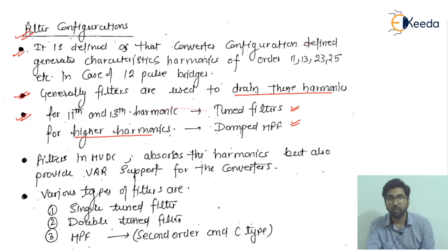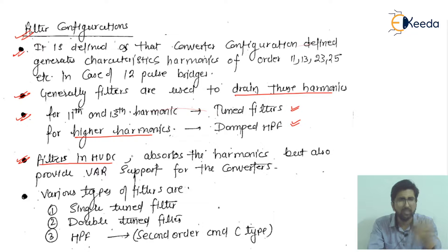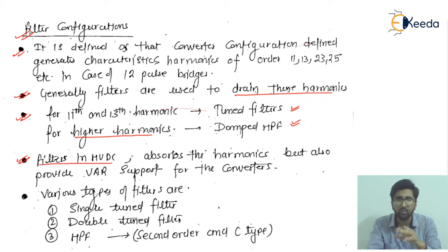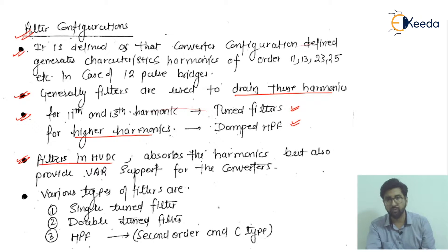Filters in HVDC not only absorb the harmonics but also provide VAR support for the converters. The filters designed for HVDC are based on innovative and modern technology. So they serve two purposes: absorbing the harmonics and also providing VAR support to the converters. This is a key benefit of using filters in HVDC.